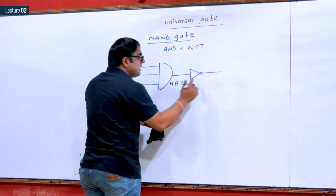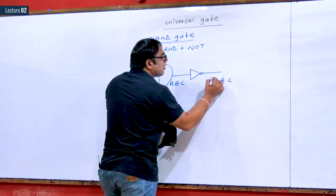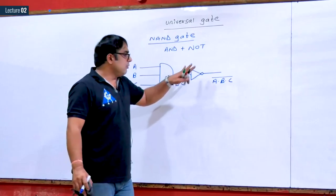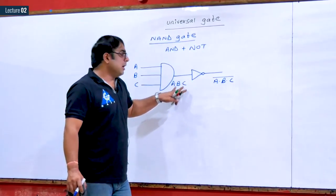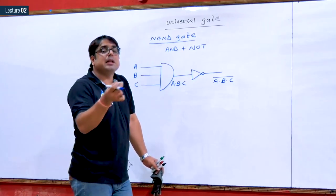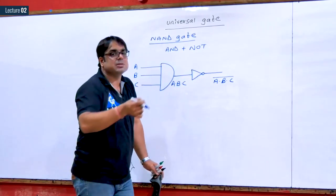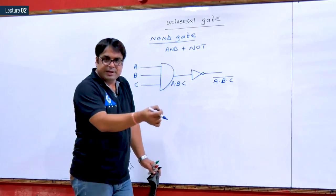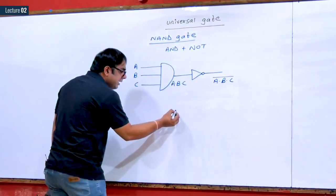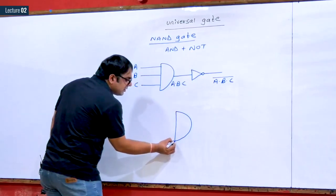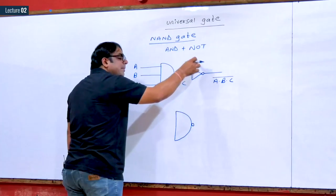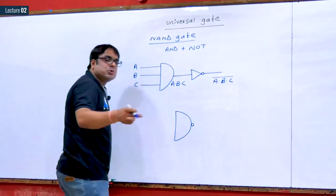So the output will become A·B·C whole complement. For a NOT gate, output is the whole complement of the input. Now, this work of the inverter can also be replaced by a bubble, as I have discussed before in this video. The work of a NOT gate can be done with the help of a simple bubble.